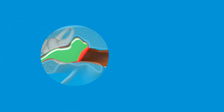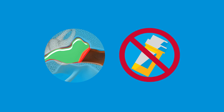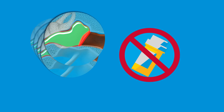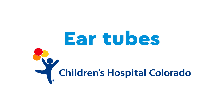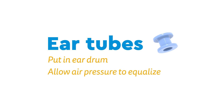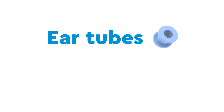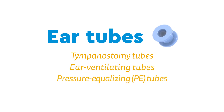Your child's ear may clear up on its own, or could clear up with the help of antibiotics. But if the infection doesn't respond to antibiotics, or if your child has repeated infections, we offer a simple procedure called ear tubes at Children's Hospital Colorado. Ear tubes are tiny tubes placed in the eardrum which allow air pressure to equalize. They are also known as tympanostomy tubes, ear ventilating tubes, or pressure equalizing — PE — tubes.